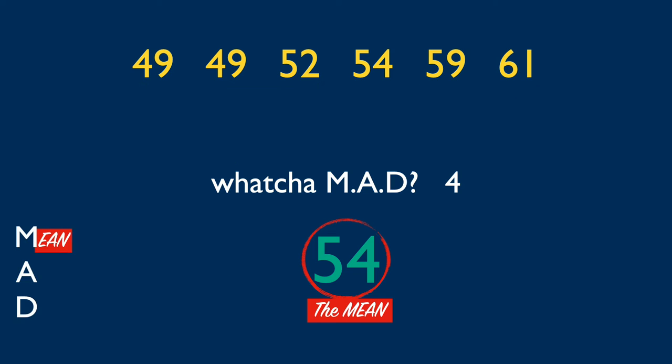What you mad for, what you, what you mad for, what you mad for. Data set: 49, 49, 52, 54, 59, 61. The mean is 54 — because we calculated it. 49, 49, 52, 54, 59, 61. And now we find the distances.